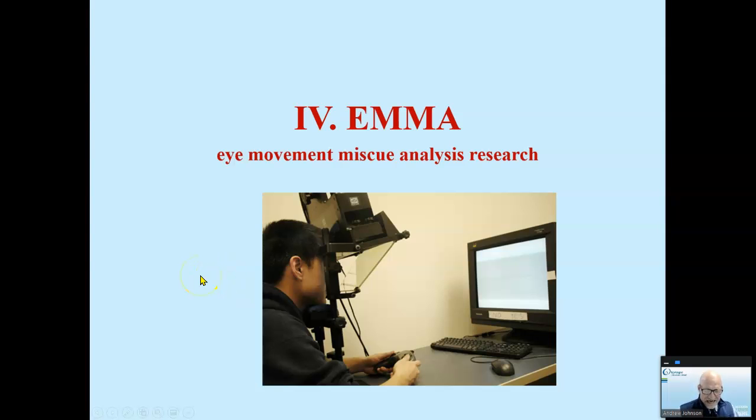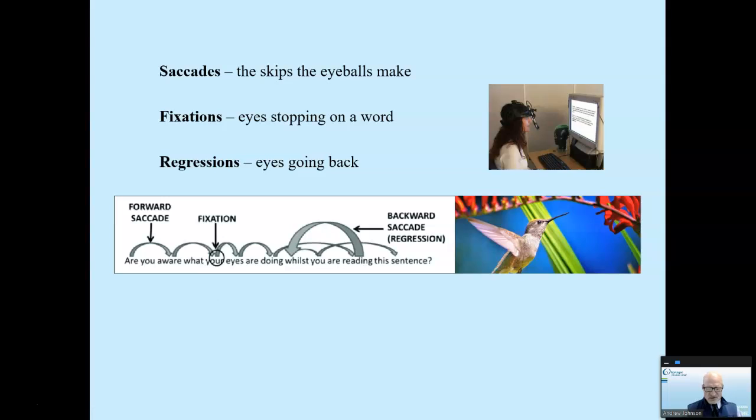So let's take a look at eye movement and miscue analysis. Eye movement research tells us much about reading and the reading process. This research looks at eye movement as people are engaged in authentic reading activities. That means they're reading passages versus individual words. Eye movement research shows us that our eyeballs don't move in a nice, straight, orderly line from left to right. Our brain just tricks us into thinking it so.